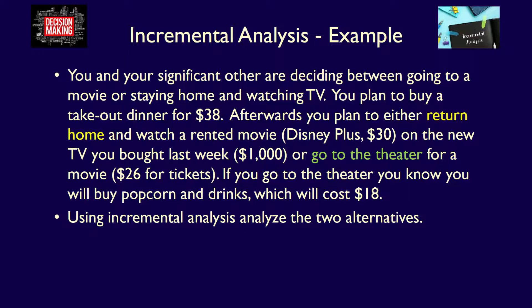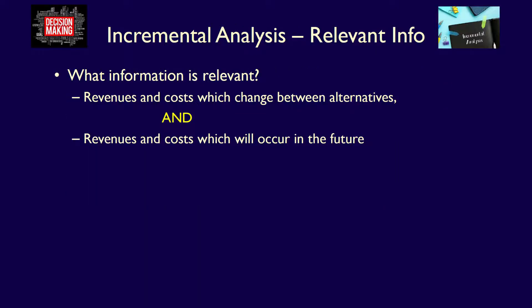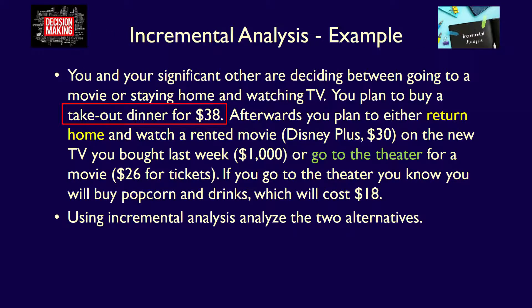Step 2 of incremental analysis is to decide which information is relevant. Relevant information consists of revenues and costs which change between alternatives and will occur only in the future. Using only relevant information eliminates unnecessary data that could complicate the decision-making process. Any information that is not relevant is irrelevant — it does not have the capacity to impact the analysis and must be ignored. The takeout dinner for $38 will happen in the future, but it does not change between alternatives, so the $38 is irrelevant and must be ignored.